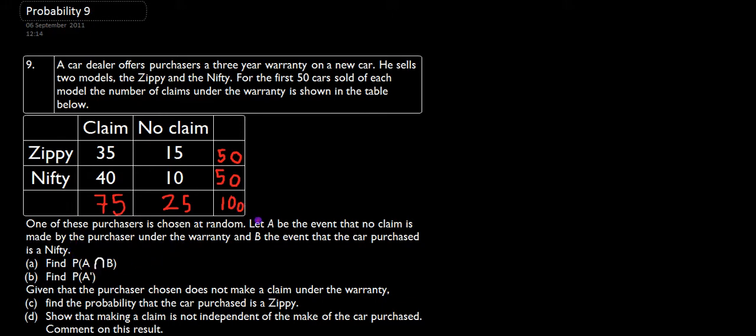Now we're going to let A be the event that no claim is made by a purchaser. So this column here gives us event A. And B be the event that the car purchased is a Nifty. So this row here represents event B happening. So we want to do A intersect B, so that's where these both overlap. The A and the B both overlap here, and that gives us 10.